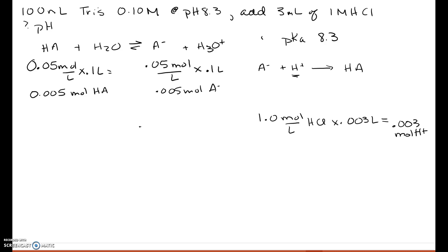So that means we have 0.003 moles of H plus, which is going to subtract from our conjugate base and create more protonated weak acid. So after this shift, we'll have 0.008 moles of HA and 0.002 moles of A minus.